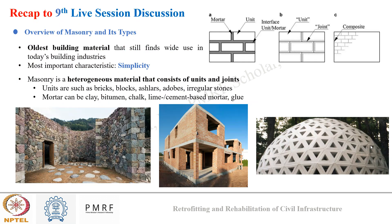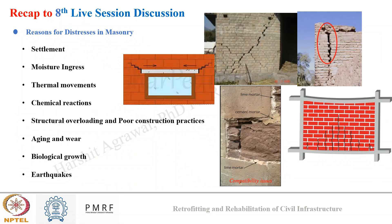In the last live session we started discussing masonry. Masonry is one of the oldest building materials that still finds application in today's building industry, and the reason is their simplicity. Masonry is a heterogeneous material consisting of units and joints — units are bricks, blocks, or stones, and joints are composed of mortar. We classified masonry into three categories: stone masonry, brick masonry, and concrete masonry. For each we saw examples and their uniqueness. After the basic introduction we looked into distresses in masonry.